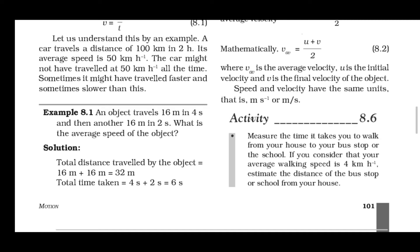दोनों को differentiate करने के साथ साथ similarities भी हैं: दोनों actual में rate of motion ही हैं, दोनों की unit same होती है — meter per second। दोनों का average formula भी same है: total distance traveled upon total time taken — यही average speed और average velocity दोनों का formula है।